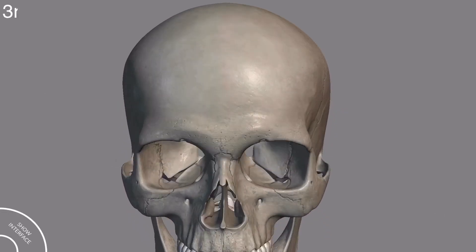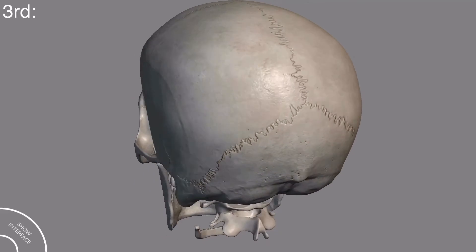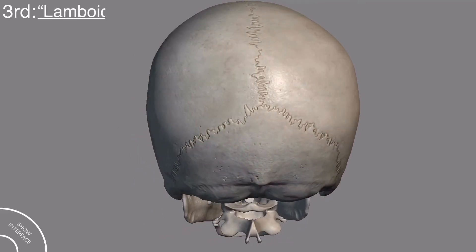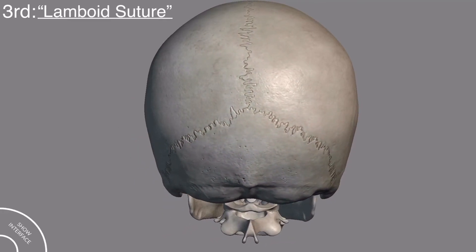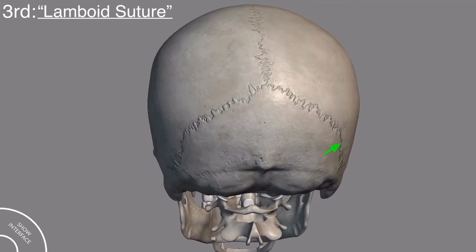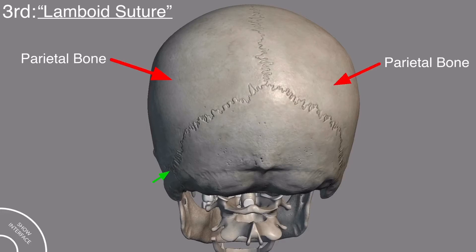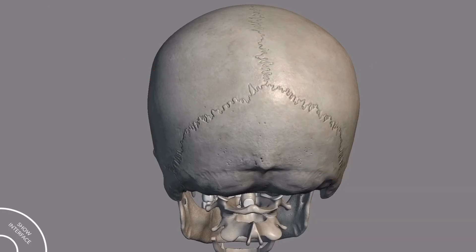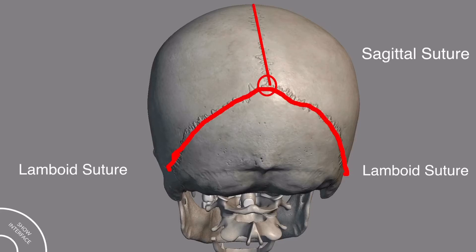The next suture of the skull is the lambdoid suture, separating the parietal bones from the occipital bone. The point where the sagittal suture and the lambdoid suture meet is called lambda.